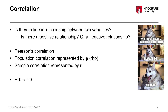Coming back to more serious things — the null hypothesis is that the population correlation is equal to zero. Remember that the null hypothesis, regardless of the test, always takes the form of there's no association, no difference, no effect, no relationship, nothing going on. For a correlation, that's expressed as the population correlation equals zero.